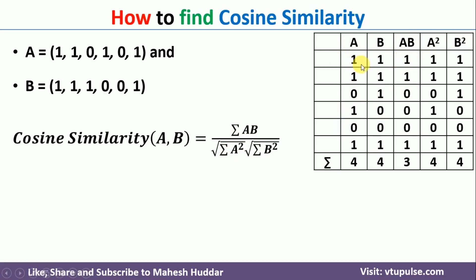AB is the multiplication between these particular data points. A squared is 1², 1², 0² and so on. Once this calculation is done, I have calculated the summation terms here — that is, summation of A, summation of B, summation of AB, and so on.